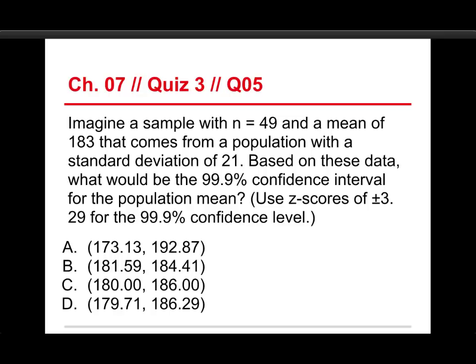All right, last one on quiz three. Imagine a sample with N of 49 and a mean of 183 that comes from a population with a standard deviation of 21. Based on these data, what would be the 99.9% confidence interval for the population mean? And for that one, 99.9, you use a z-score of 3.29 for it. Okay, and then we have a bunch of pairs and numbers here.